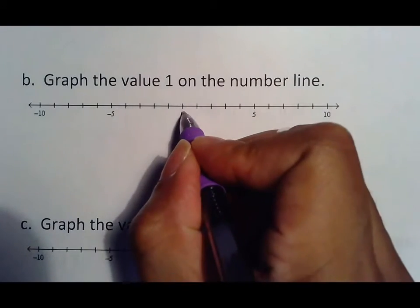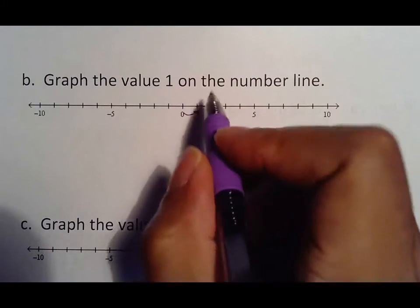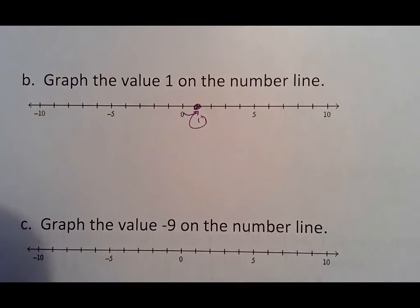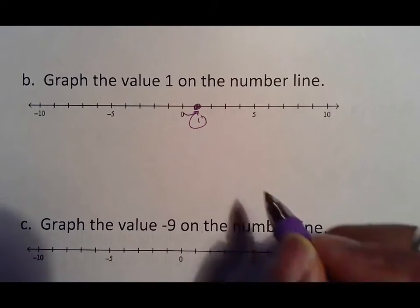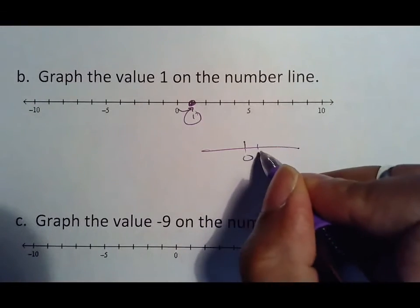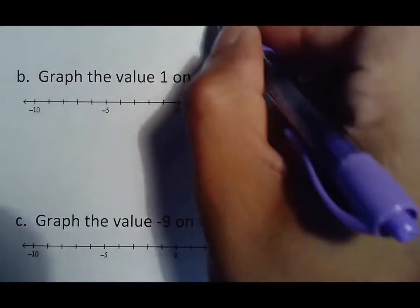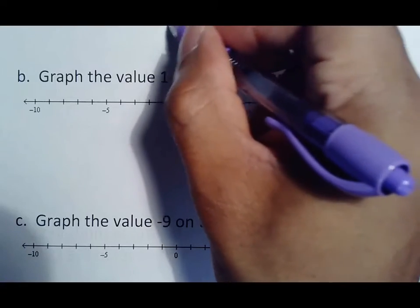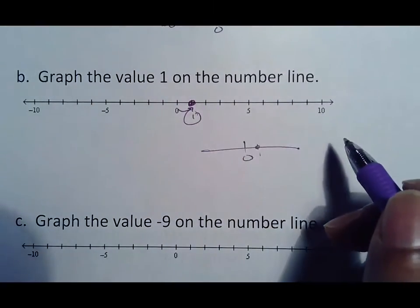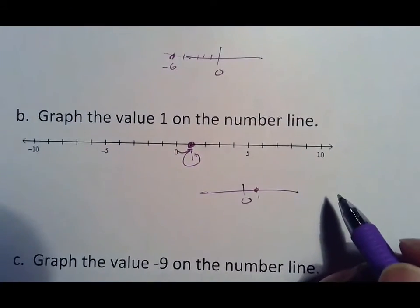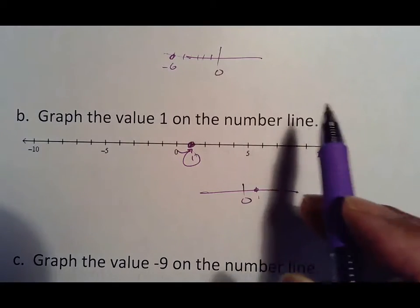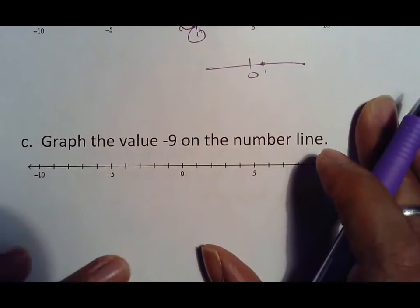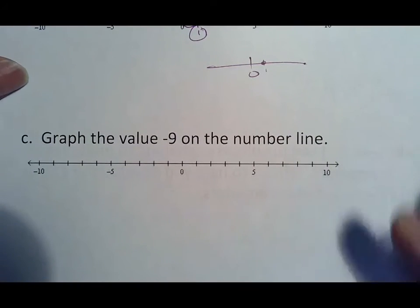Graph the value one. Starting at zero, we go forward one step because that's a positive one — put our dot and label it with a one. On paper you simply put a zero here, go one, and put your dot. Then for negative six on paper: zero, one, two, three, four, five, six — put your dot. The key thing here is make sure I can see where zero is, so that I know you understand what's going on.